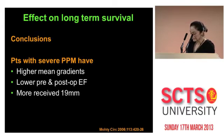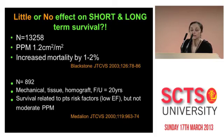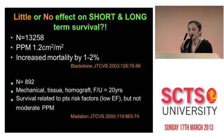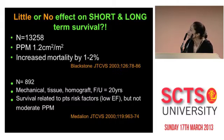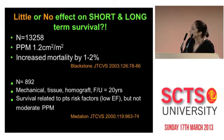However, others disagree that mismatch affects short- and long-term survival. One of these papers is by Dr. Blackstone and colleagues, where they reviewed the results of nine centers and over 13,000 patients in North America. Patients with a patient prosthesis mismatch of 1.2 and less had no different short- and long-term survival — only a higher operative mortality by 1 or 2%. So they thought mismatch does not really affect short- and long-term survival.